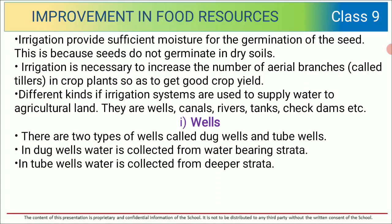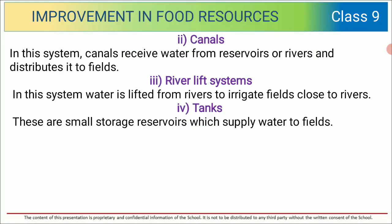Different kinds of irrigation systems are used to supply water to agricultural land — wells, canals, rivers, tanks, check dams, etc. There are two types of wells: dug wells and tube wells. In dug wells, water is collected from water-bearing strata. In tube wells, water is collected from deeper strata.